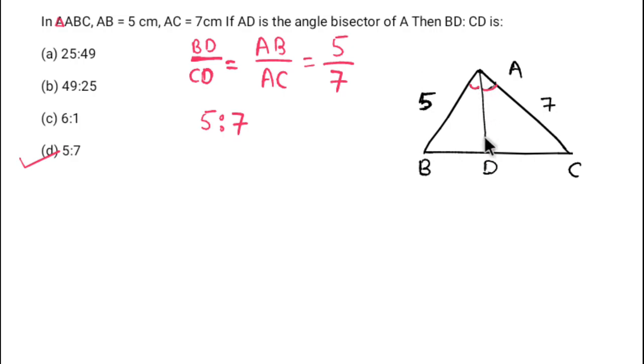This property states that if we have a triangle with one angle bisector, it divides the opposite side in the ratio of the remaining two sides. So this question is easy to solve. I'll see you in the next video. Bye bye and take care.